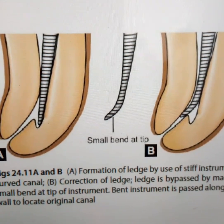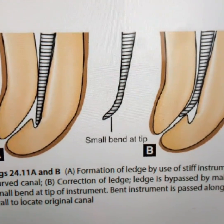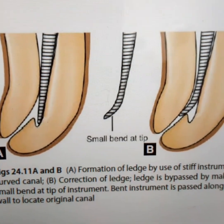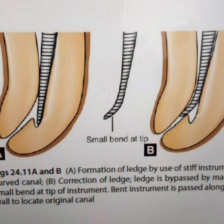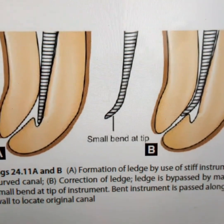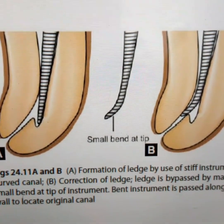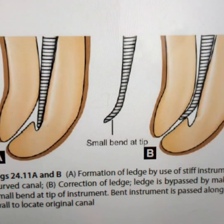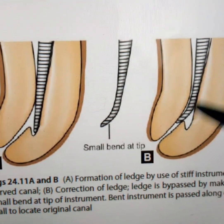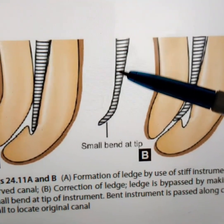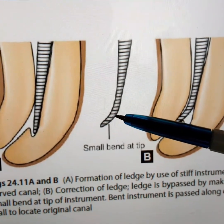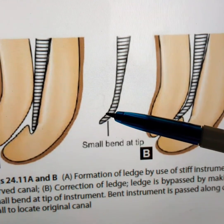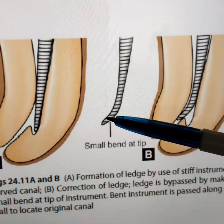Using an inappropriate technique during instrumentation also contributes to ledge formation. To avoid it, you have to use a flexible file and pre-bend it to let the tip of the file reach the inner curvature. We have to bend the tip of the file in order to reach the inner curvature.